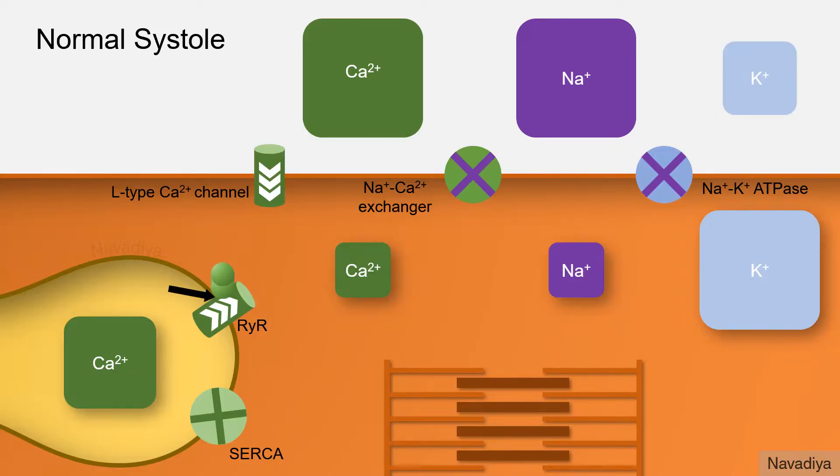This calcium binds with ryanodine receptor calcium channels and triggers release of calcium from sarcoplasmic endoplasmic reticulum into the cytoplasm. Increased cytosolic calcium initiates contraction resulting in systole.